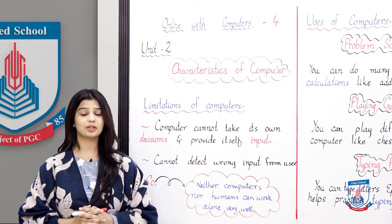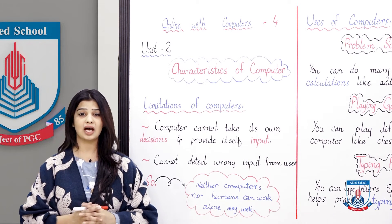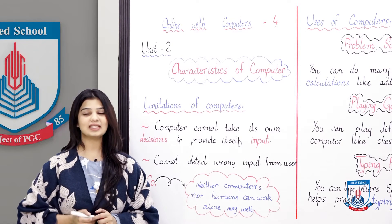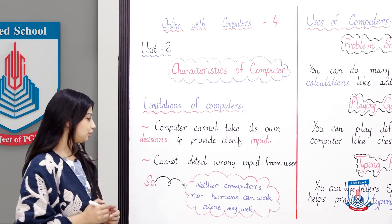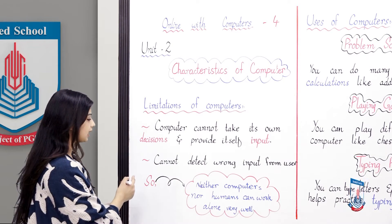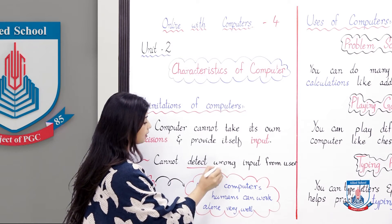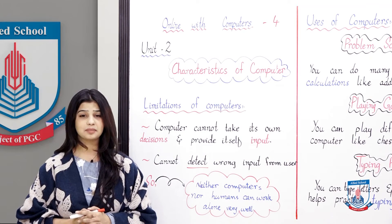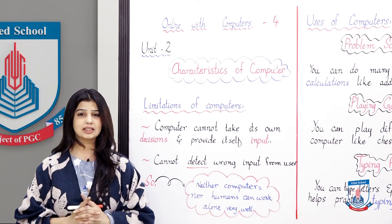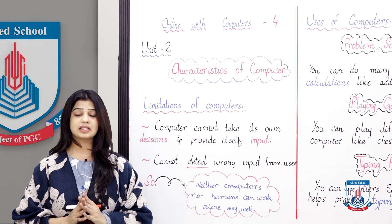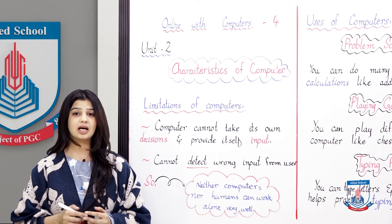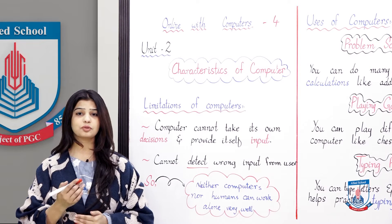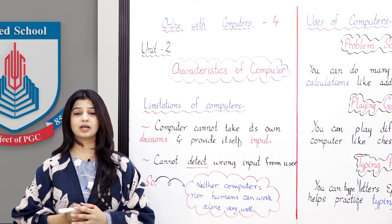The computer can never take a decision from itself or give itself input. Now let's see the second limitation: the computer cannot detect wrong input from the user. 'Detect' means to know — the computer can never know that you have given it the wrong input.